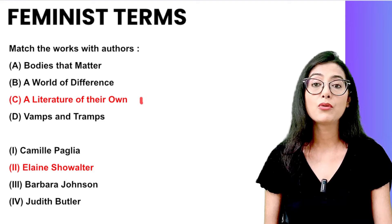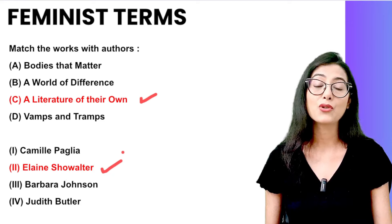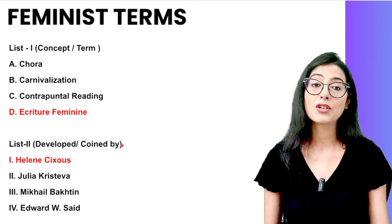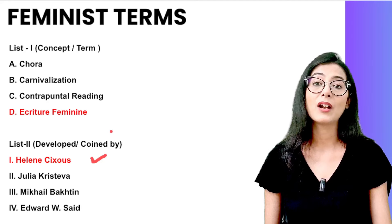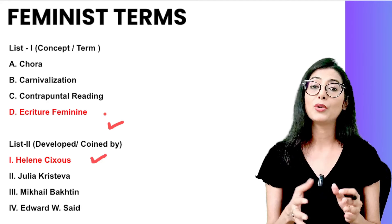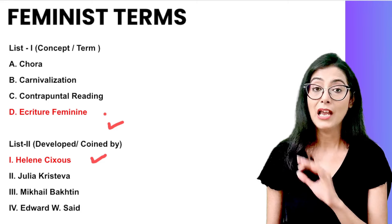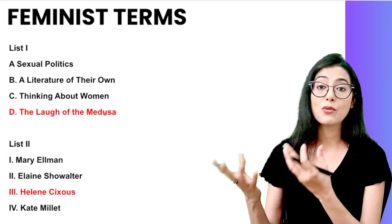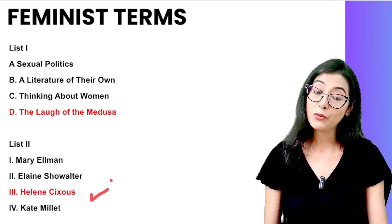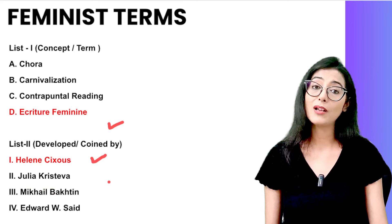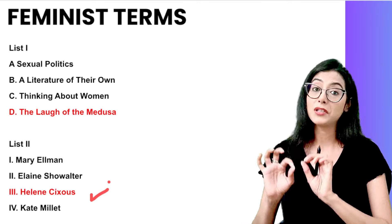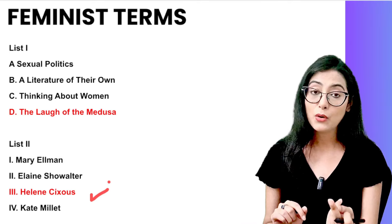In a match-the-following question, A Literature of Their Own is matched with Elaine Showalter — as I mentioned, this is one of her essays. You will also see the question that écriture féminine is Hélène Cixous's term. There are many more terms which have become a favourite question of literary theory today. These were all the questions. The last question you can see is about Hélène Cixous's The Laugh of the Medusa — which is very important for you. Remember which book a term was coined in, which term was coined, and on which date. The chronology also needs to be written.